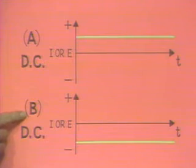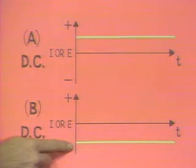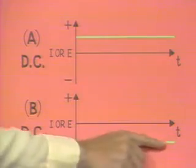Waveform B is also a DC waveform. It has a polarity opposite to that of the A waveform and does not change in amplitude.